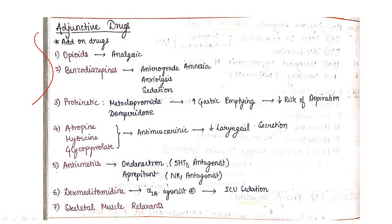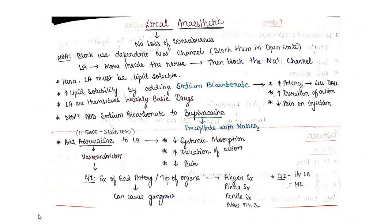These are the adjunctive drugs: opioids, benzodiazepines, prokinetics, atropine, scopolamine, glycopyrrolate, antiemetics, dexmedetomidine, and excitatory muscle relaxants. Read these drugs on your own. Thank you for watching, best of luck.